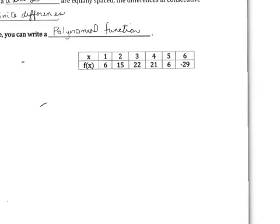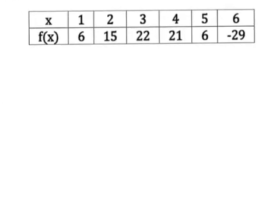So, let's subtract and then to blow this up a little bit. So, we want to subtract 6 here from 15, so we are going to go this way with our subtraction. And that is 9. They are the same way. 22 minus 15 is 7. 21 minus 22 is negative 1, it's ok to have negatives. 6 minus 21 is negative 15. And then negative 29 minus 6 is negative 35.